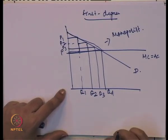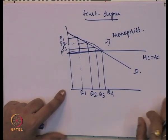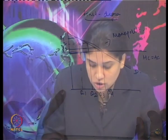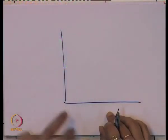In one case we know the entire consumer surplus is taken by the monopolist, and secondly we will see how there is no dead weight loss because the entire dead weight loss also goes into the consumer surplus.